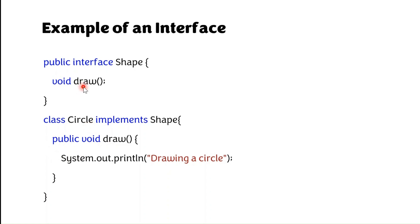While you are implementing the abstract method, you must use the access modifier public. Why? Because the methods in the interface are public and abstract. When implementing an abstract method in the class, you must use the access modifier public — otherwise it defaults to package-private.